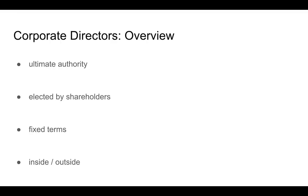The board is elected by the shareholders, and as such they're answerable to the shareholders. They serve fixed terms, which are usually determined by the corporate bylaws, but in some cases they can be decided by statutes. These same corporate bylaws and statutes would also govern whether or not a director could serve multiple terms successively. There are two types of corporate director.